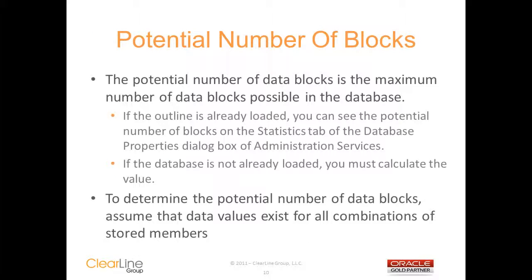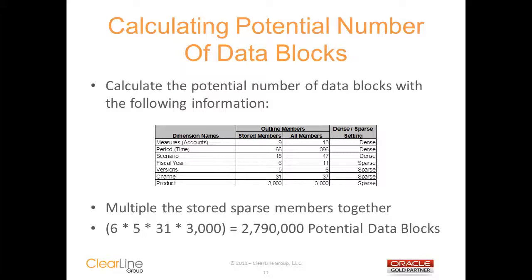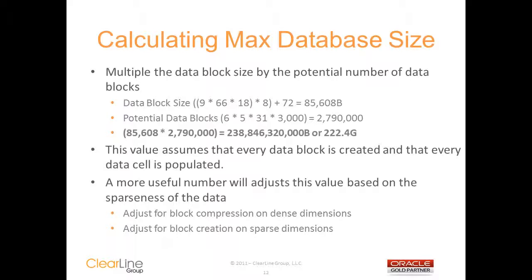The potential number of data blocks is the maximum number of blocks that is possible in the database — this value assumes that every block is created for all the stored member combinations. There's another simple calculation for figuring out the potential number of data blocks: you just need to multiply the stored sparse members together. In this example, you would multiply the 6 years by the 5 versions, 31 channels, and 3,000 products to come up with 2,790,000 potential data blocks. You can then calculate the maximum size of the cube by multiplying the data block size by the potential number of data blocks — in this case giving you a maximum database size of 222.4 gig. This assumes that every block is created and that every cell is populated.